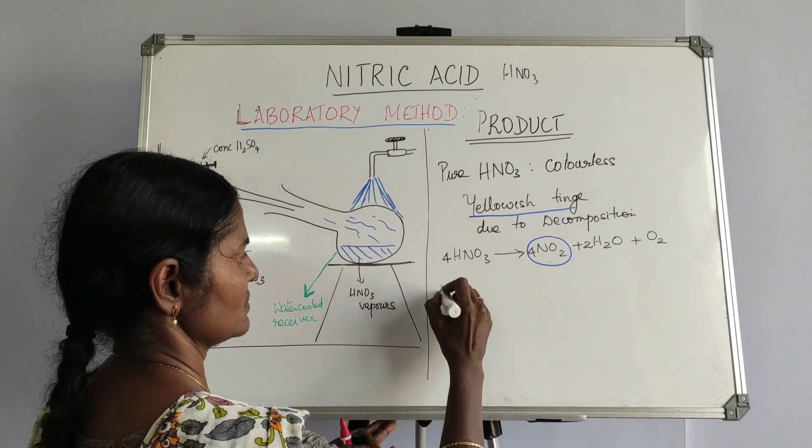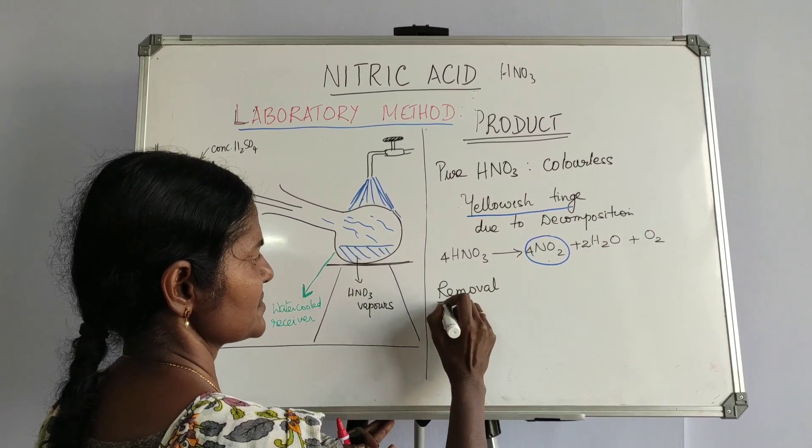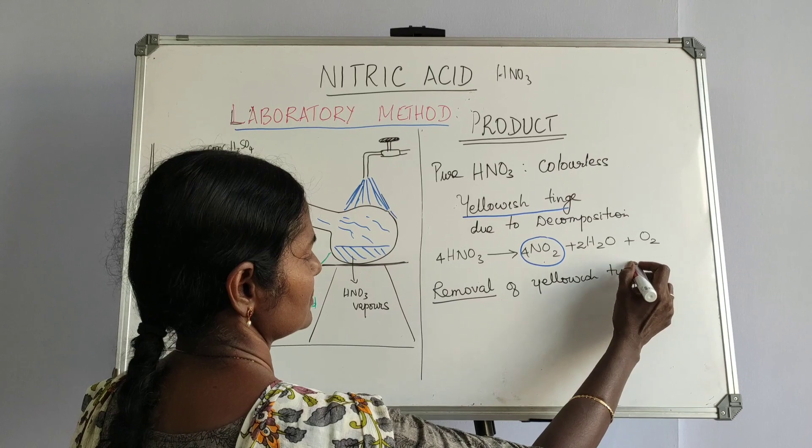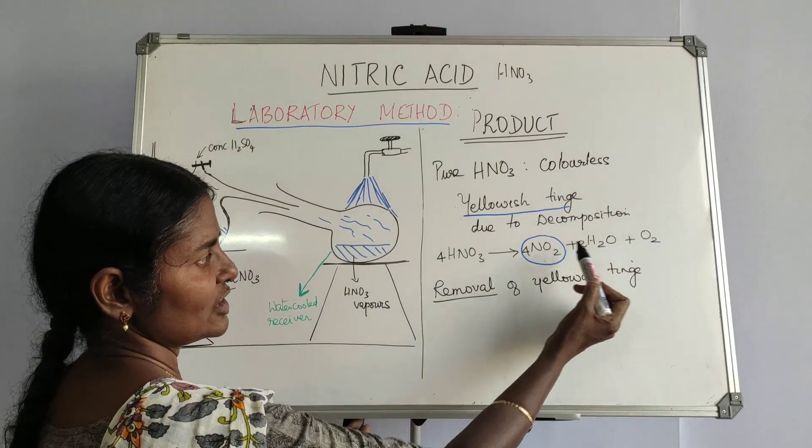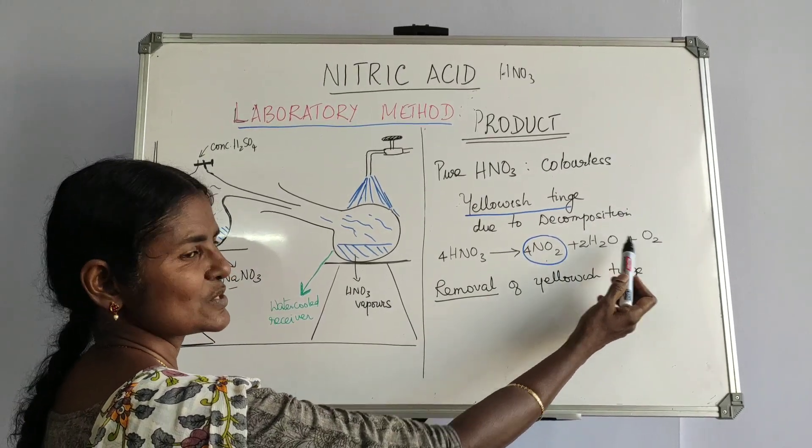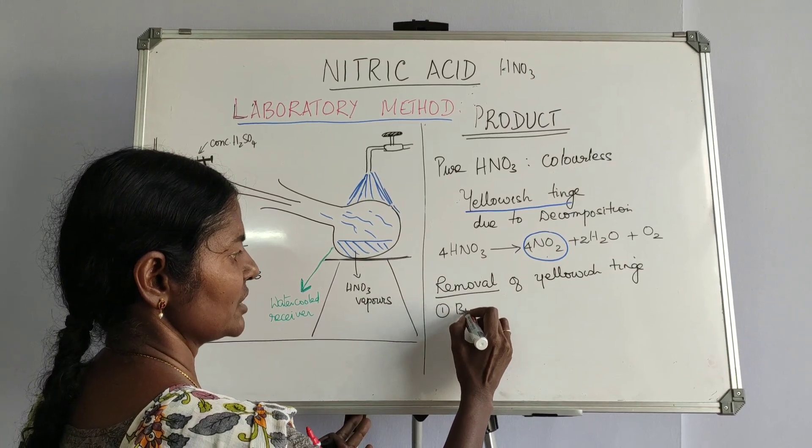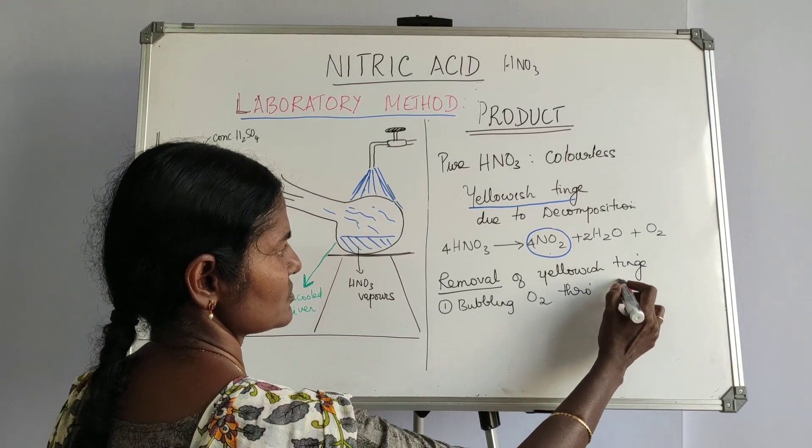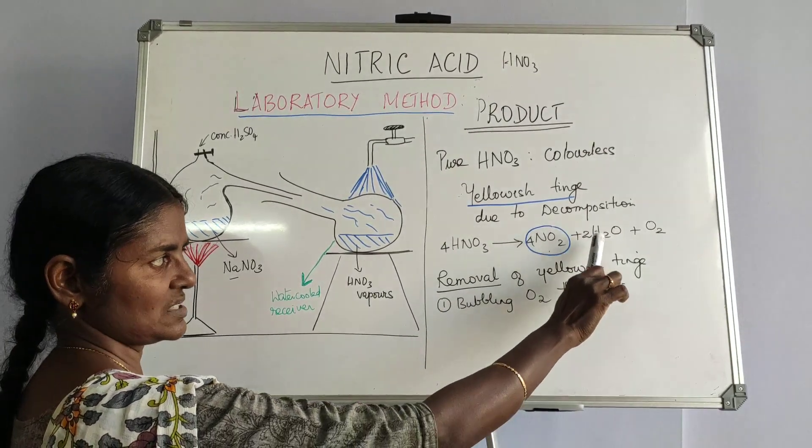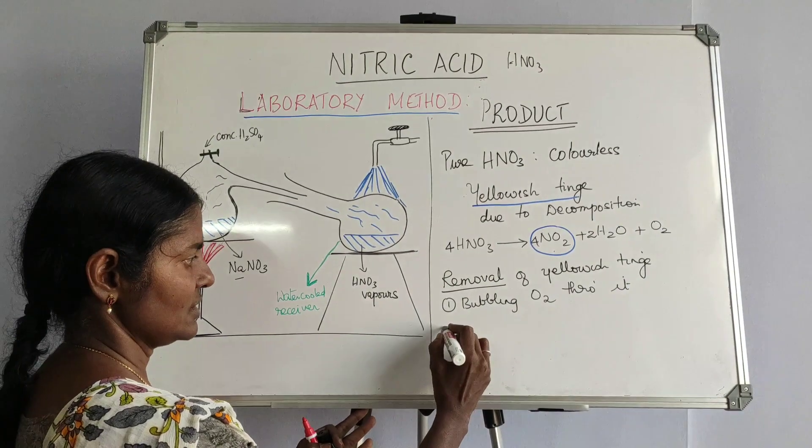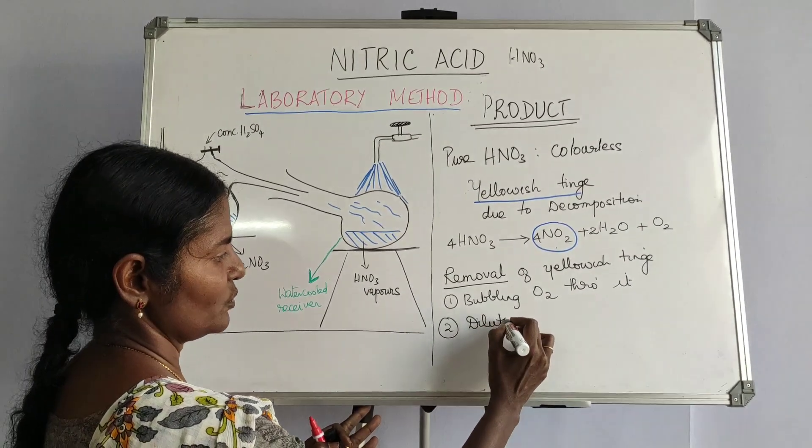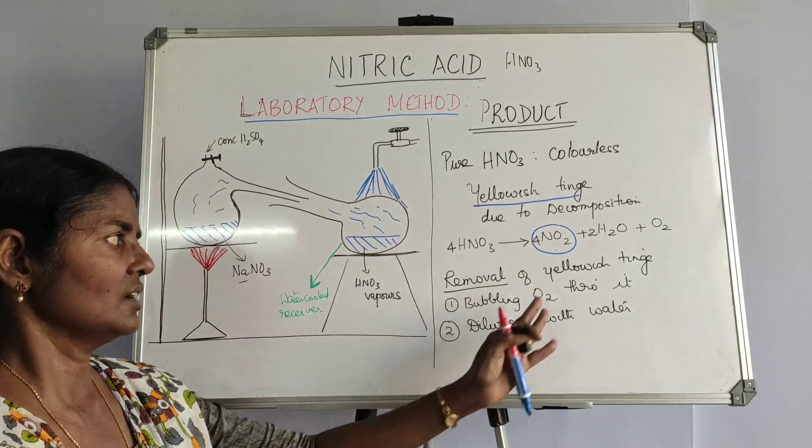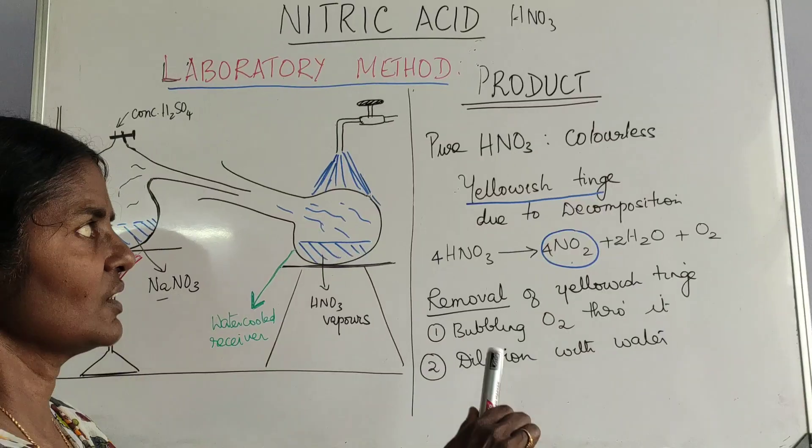This can happen in two steps, removal of the yellowish tinge. One is, this is, if this has to be removed, either of these things should be added. So the first one is, bubbling oxygen through it. So when you blow in oxygen, it combines with nitrogen dioxide and water vapor. Gives back the colorless nitric acid. The second one is, diluting with water. This again, when water is added, it mixes up with these two, reacts and forms nitric acid. This is how we get nitric acid.